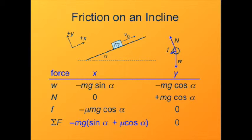The net force in the y direction must be zero — the object is not accelerating into or away from the ramp. In the x direction, we add minus mg sine alpha and minus mu mg cosine alpha, and factoring out mg gives minus mg times (sine alpha plus mu cosine alpha). The net force is necessarily downhill: both the object's weight and friction push it downhill, so the object sliding up the ramp will slow down faster because of friction.